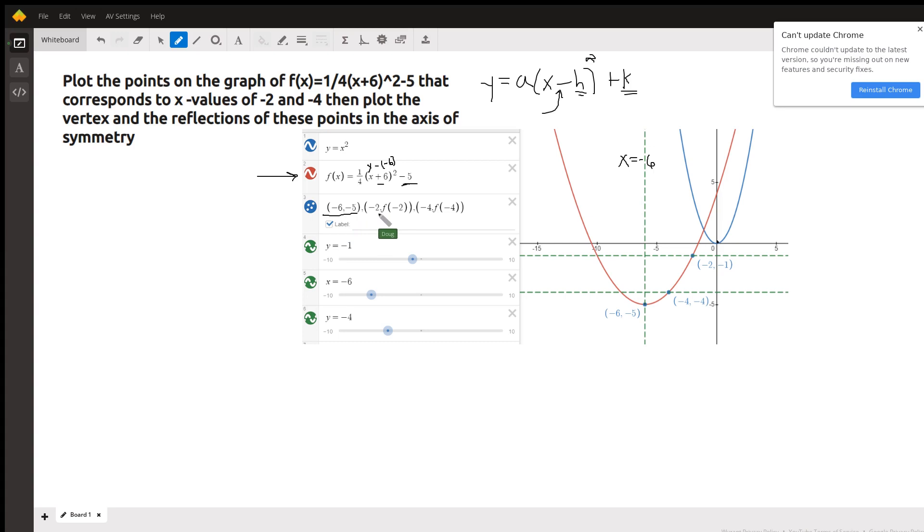And to find out the point that corresponds to an x-coordinate of negative two, you have to plug negative two into the function, which turns out to be this y value right here, negative one.